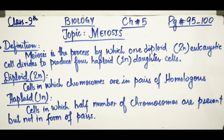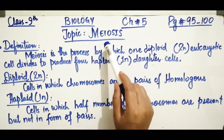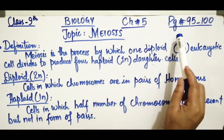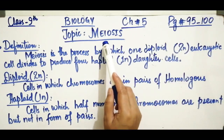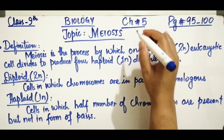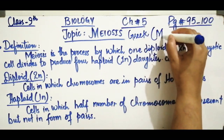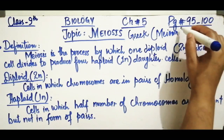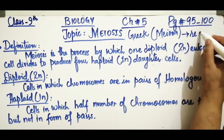Bismillahirrahmanirrahim. Assalamu Alaikum, dear students. Today we will start the next topic from chapter number five, and the topic is meiosis. This topic is mentioned in your textbook on pages 95 to 100. Before starting the main topic, we must know the meaning of meiosis. The word meiosis comes from the Greek word 'meion', and the meaning of meion is to get smaller, to reduce something.